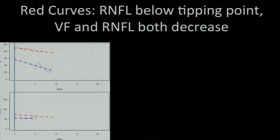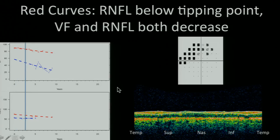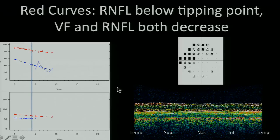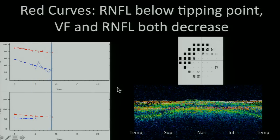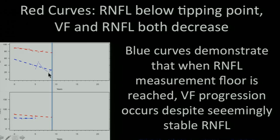This is a patient who changes in both structure and function. And what I want you to pay attention to is first the red curves. So the red curves are one eye. And you can see that the person has visual field loss. The person is already below the tipping point. And that visual field loss and OCT thinning occur. But I also want you to look at these blue lines, because here you see a reduction in the VFI, but the OCT is stable. And the OCT is stable because you've already reached the floor for that eye.